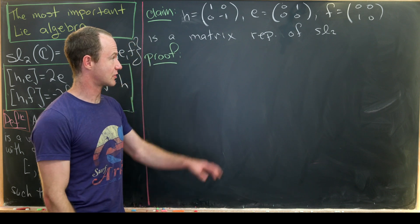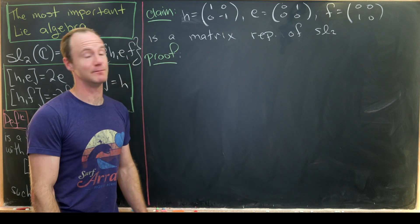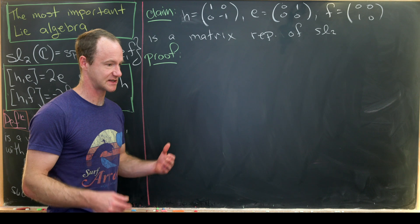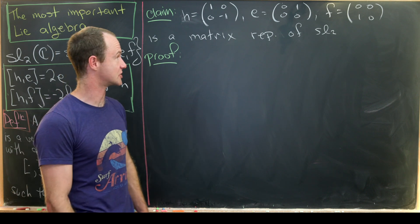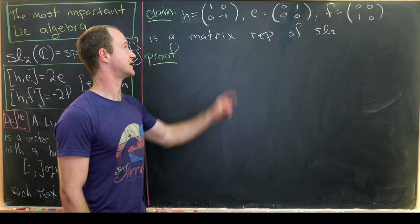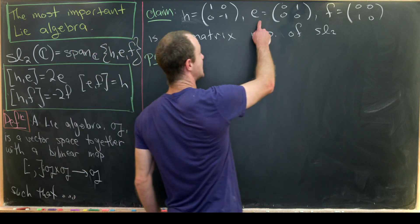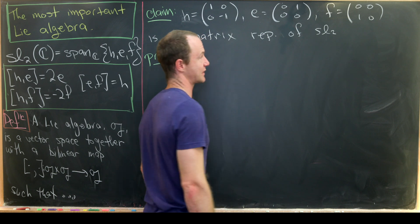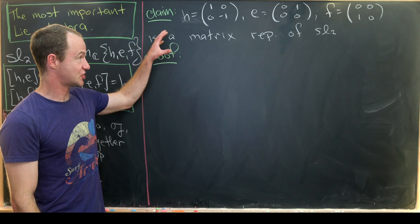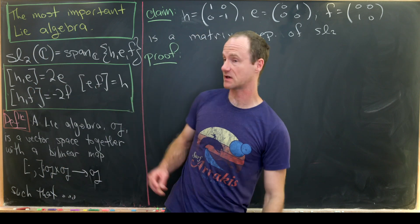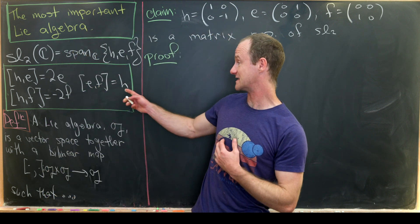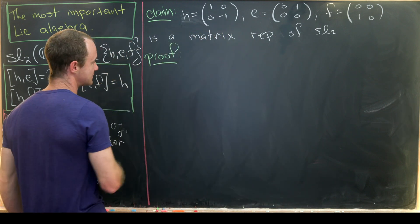To start off I'd like to prove that the following is a nice matrix representation of SL2. I did a previous video where we constructed SL2 from its Lie group and got this matrix representation, so check that out if you're interested. Here we take h to be the diagonal matrix with entries 1 and −1, e to be the superdiagonal matrix with a 1, and f to be the subdiagonal matrix. To verify this, we check that these matrices commute in exactly the same way as the bracket relations.